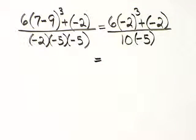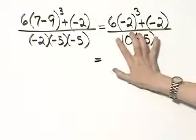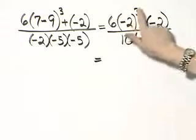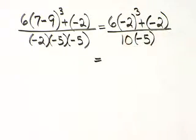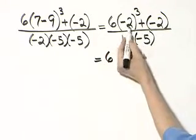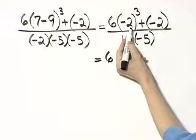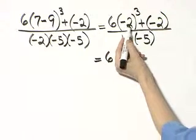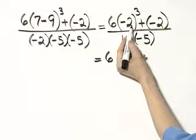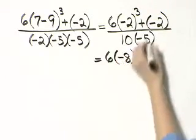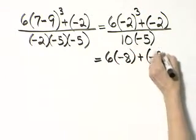Let's continue working in the numerator and the denominator separately. What do I perform next in the numerator? Notice I have an exponential expression here, so I evaluate that expression next. That's 6 times negative 2, that quantity cubed — so it's negative 2 times negative 2 times negative 2. Negative 2 times negative 2 is 4; 4 times negative 2 is negative 8. Then I still have 6 times negative 8, plus negative 2.